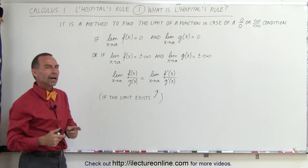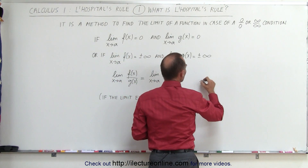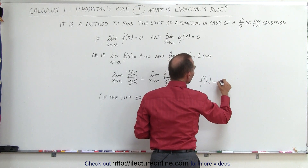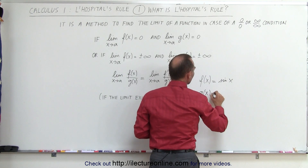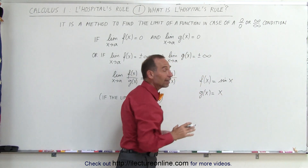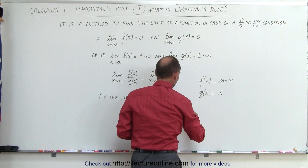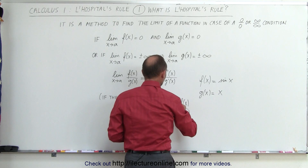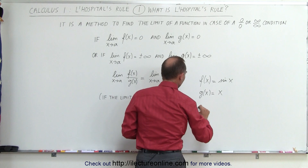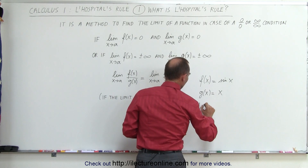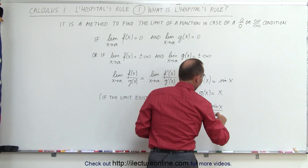Take a simple example. Let's say we have a function f of x which is equal to the sine of x, and g of x which is equal to x. Now let's divide one by the other. So in this case we have f of x divided by g of x, and we want to find the limit as x approaches 0. That is the limit as x approaches 0 of sine of x divided by x.